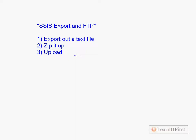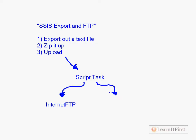If I'm doing this in a script task, I might have different methods that I would run depending on where the file is located. For example, I want to run a plain internet FTP — I'm going to run an internet FTP method that handles everything about my uploading. If I want to do SFTP, I'd have a different method for SFTP. If I wanted to do a local or network directory drop using a backslash-backslash server-backslash share path, then I might have three different methods in my script task.